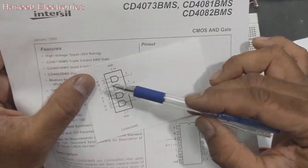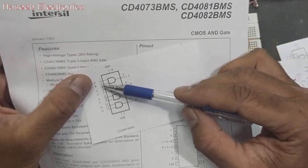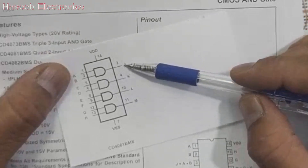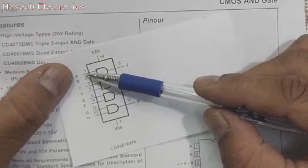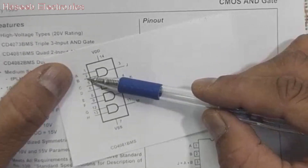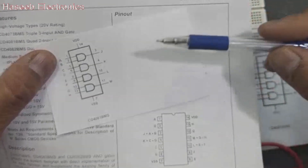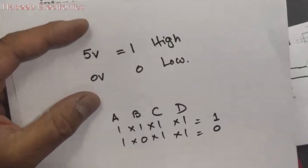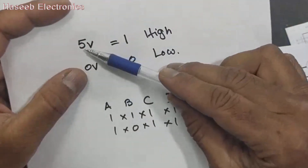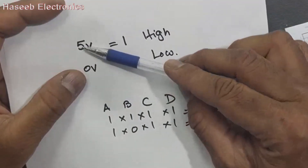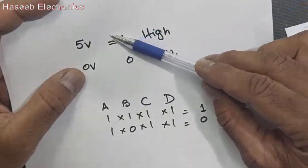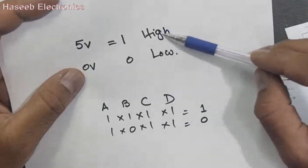An AND gate is a decision-making circuit. It takes inputs and gives a logical output. If pin number 1 and pin number 2 are high — high means logic level high — that is defined as logic 1. For example, if at any pin we have more than 3 volts, you can say 5 volts, it will be considered logic 1. That is called high logic.